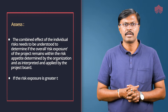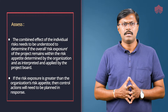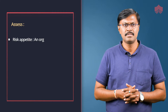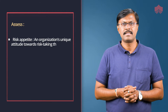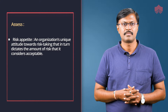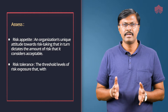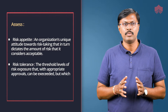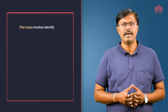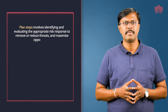If the risk exposure is greater than the organization's risk appetite, then control actions will need to be planned in response. Risk appetite and risk tolerances should also be evaluated. Risk appetite refers to an organization's unique attitude towards risk taking that dictates the amount of risk considered acceptable. Risk tolerance is the threshold level of risk exposure that, when exceeded, will trigger some form of response. The plan step involves identifying and evaluating appropriate risk responses to remove or reduce threats and maximize opportunities.